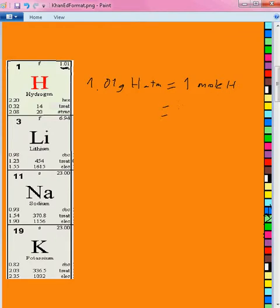It's grams of hydrogen atoms equals 1 mole of hydrogen, which is actually 6.022 times 10 to the 23rd atoms of hydrogen. So they actually figured out that 1 mole of hydrogen weighs 1.01 grams of hydrogen, and they did that for every element.